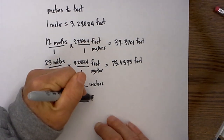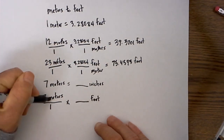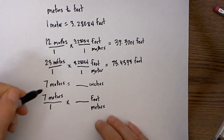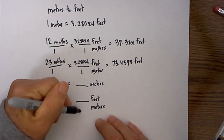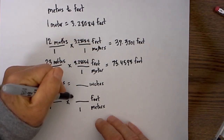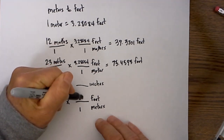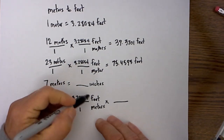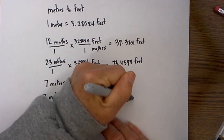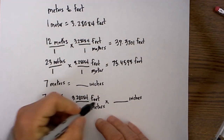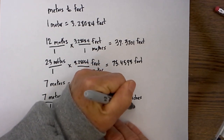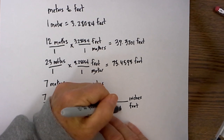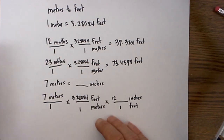So I will go to feet first. Place meters on the bottom and ask myself which is larger, meters or feet. I know that 1 meter is equal to 3.28084 feet. I then can go to inches, so I put my unit that I want to convert to on top and what is given on the bottom. Which is larger, feet or inches?